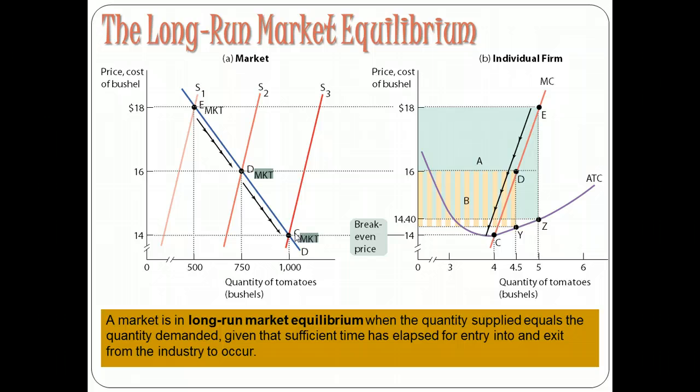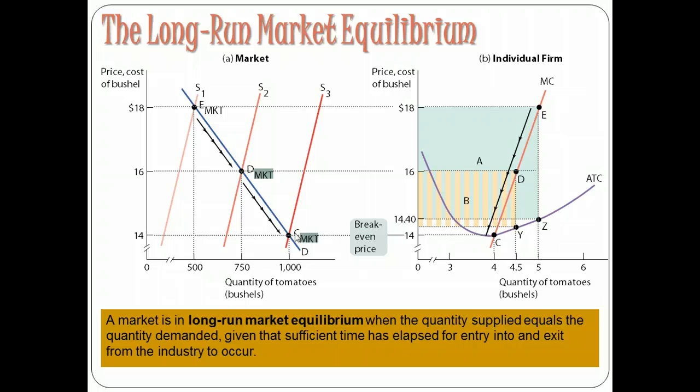Long-run equilibrium leaves firms with economic profit of zero, or normal profit. So in long-run market equilibrium in a perfectly competitive market, firms will earn normal profit. It doesn't mean they don't have accounting profit — it just means they can't do any better for themselves than what they're doing right now.